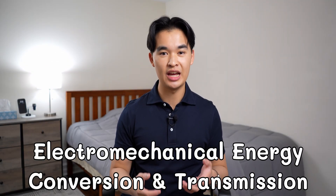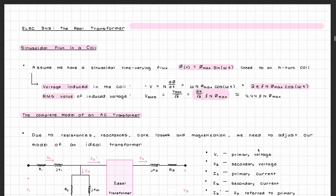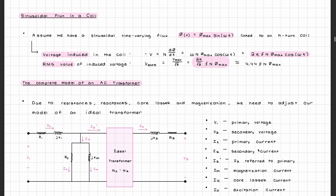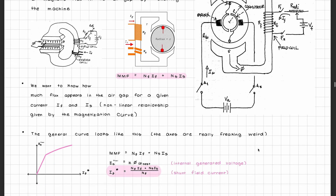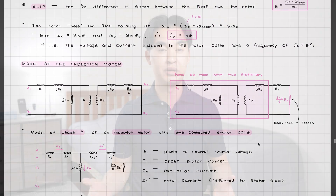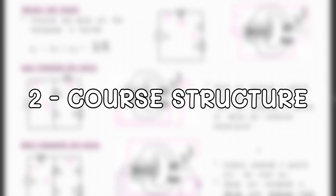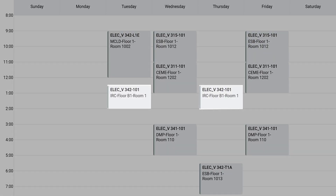So what is ELEC342 all about? In this course you'll learn all about electromechanical energy conversion and transmission, covering concepts such as magnetic circuits, transformers, three-phase power, DC motors, synchronous generators, and induction motors. Now that we know what the course is about, let's get into how ELEC342 will be structured for any given week and the materials you'll need.